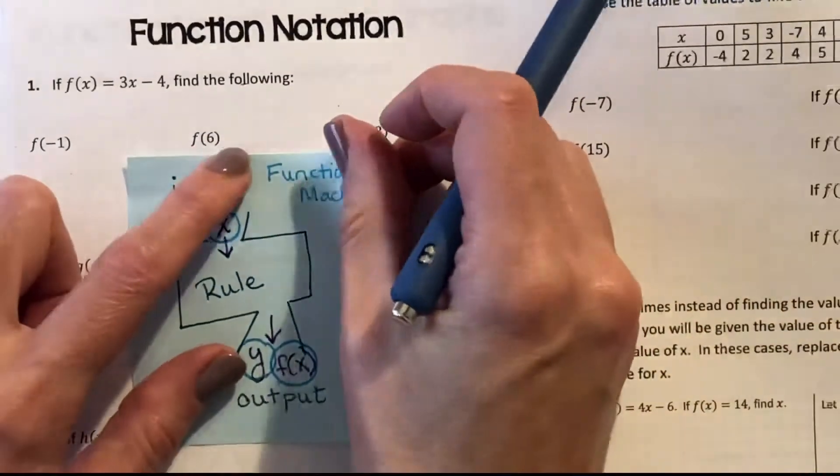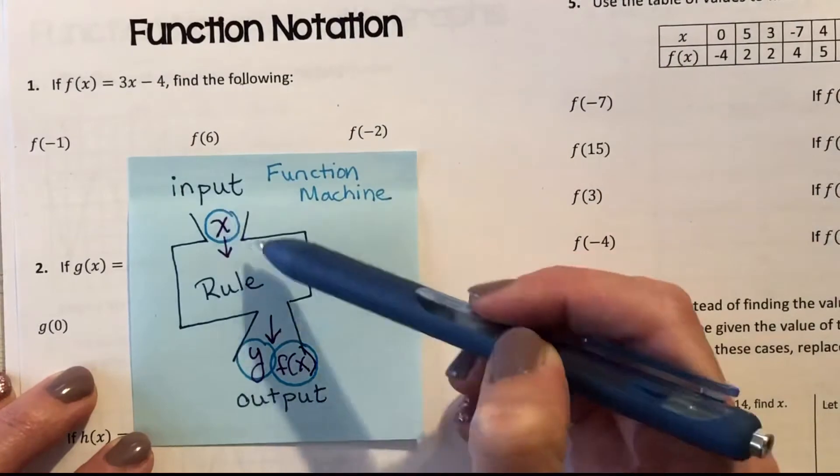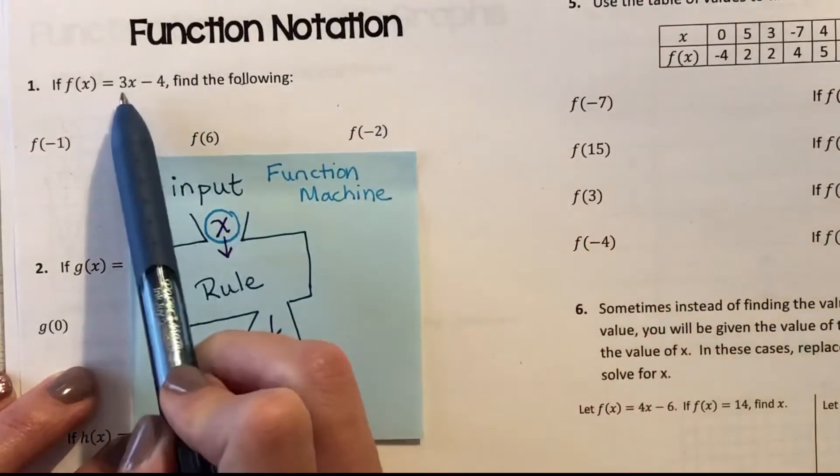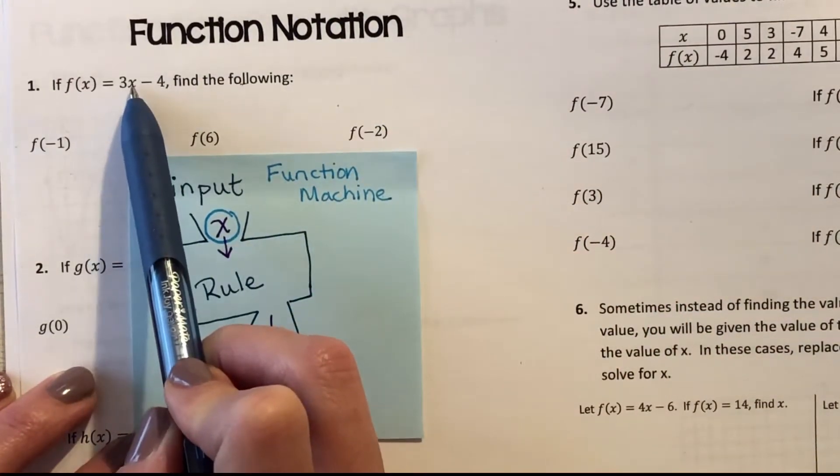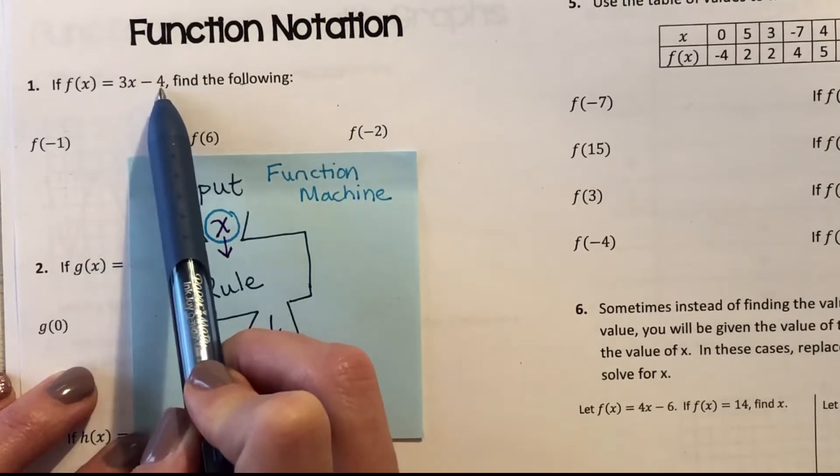If we remember our function rule, we have some sort of a rule. In this case, my rule is taking a number, multiplying it by 3, and then subtracting 4.